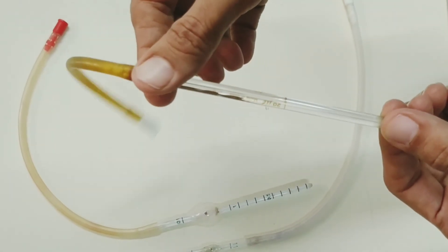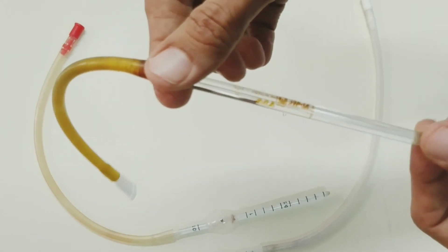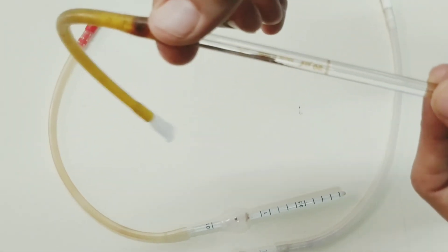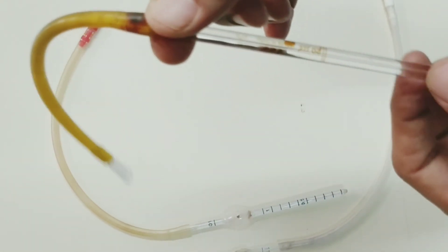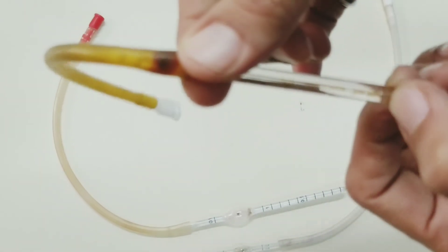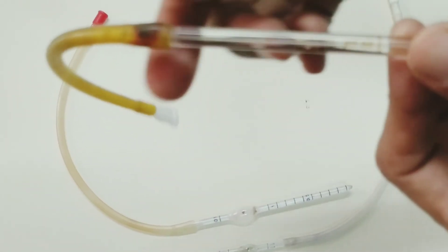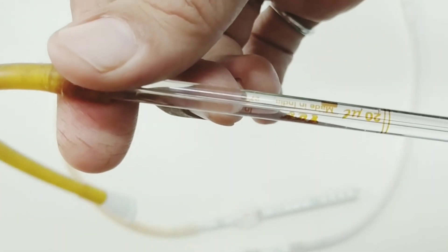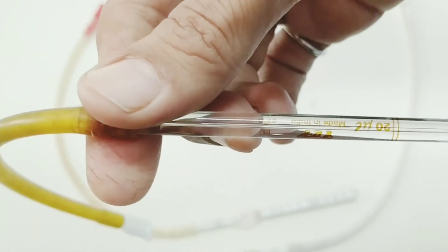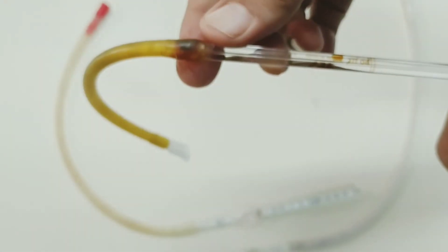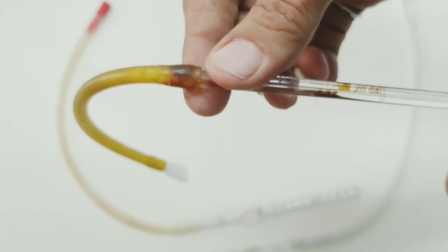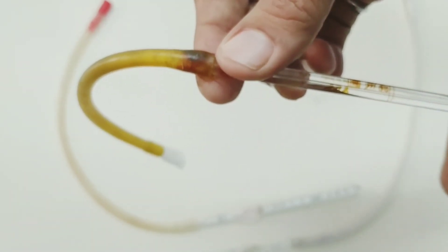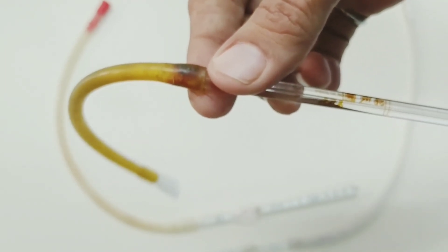The hemoglobin pipette has no bead, it has only a stem part, and the marking is only a single marking of 20 microliters. This is 20 microliters in the hemoglobin pipette and it is used to get the blood for hemoglobin estimation.